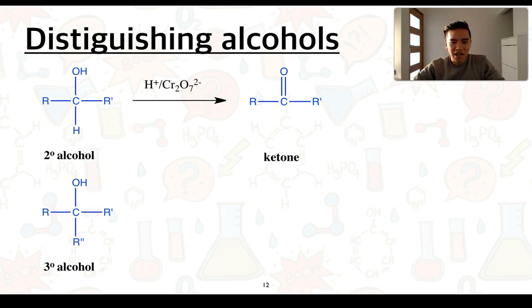Tertiary alcohols on the other hand we know are unable to be oxidized because if we think of oxidation as a gain of oxygen and a loss of hydrogen, this carbon has no hydrogens that it essentially can lose and therefore it can't gain another bond with an oxygen. We know that carbon can only form a maximum of four covalent bonds.